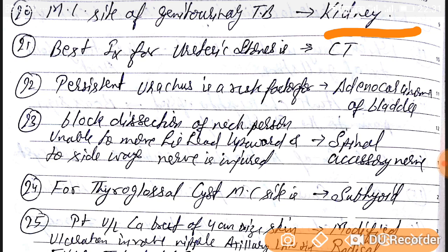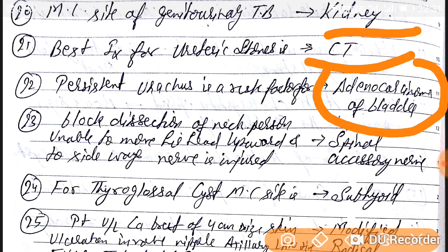Question number 21: best investigation for ureteric stones is CT — computed tomography. Question number 22: persistent urachus is a risk factor mainly for adenocarcinoma of the bladder.